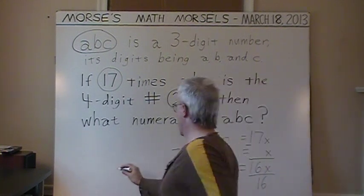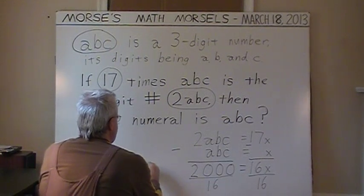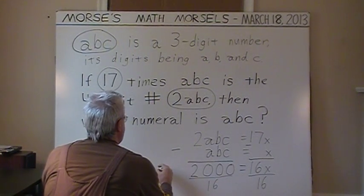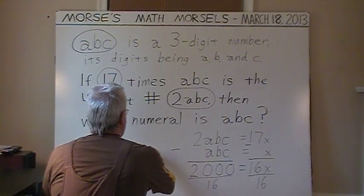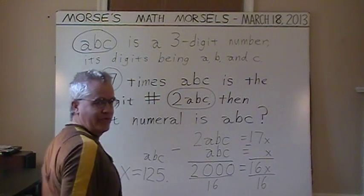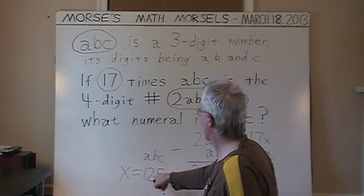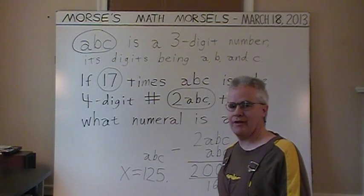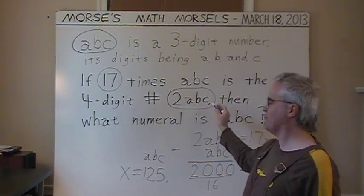Moving forward to a clear space: X equals 125. That's our three-digit number ABC. You can check that by taking 125 and multiplying it by 17, and verifying that the product is indeed 2ABC.